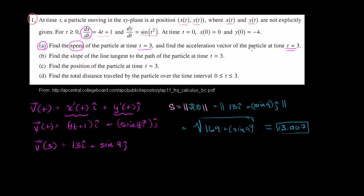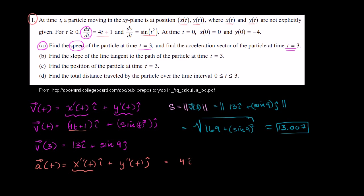Then they want us to find the acceleration vector of the particle at time t equals 3. The acceleration vector as a function of time is just going to be the second derivative of x with respect to t — the acceleration in the x direction — times i, plus the acceleration in the y direction, which is the second derivative of y with respect to t, in the j direction. The second derivative of x of t is just the derivative of the first derivative. The first derivative is 4t plus 1; you take the derivative of that, you just get 4. So we get 4i plus — the first derivative of y is sine of t squared.